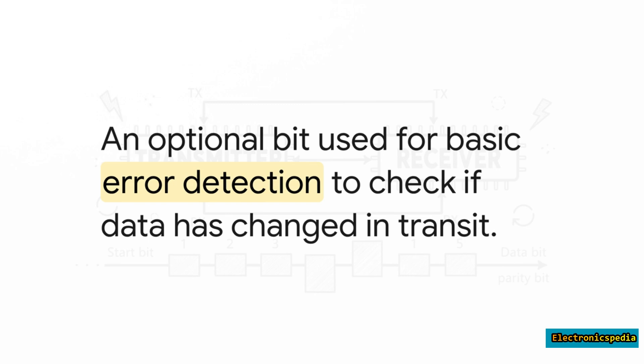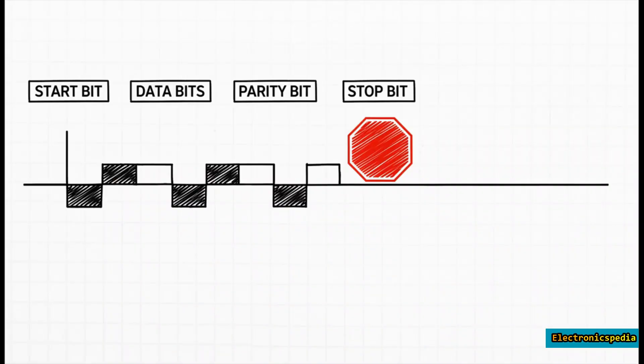And to wrap it all up, the transmitter sends out a stop bit. It does this by driving the line back high to a logical one for one or sometimes two bit lengths. This is the 'over and out.' It tells the receiver the message is officially done and puts the line back into that quiet idle state, ready for the next packet.